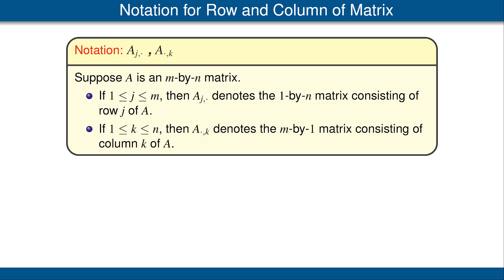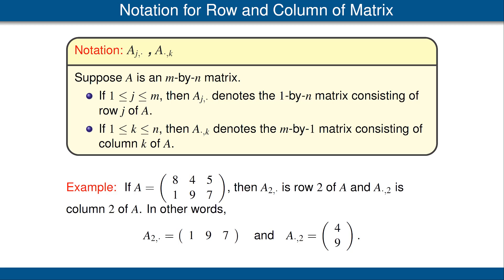I now want to introduce some useful notation for denoting the rows and columns of a matrix. Suppose A is a matrix. Then A with subscript j-dot denotes the jth row of A, and A with subscript dot-k denotes the kth column of A. This is easy to remember because we always think of rows first and then columns when dealing with subscripts. For example, if A is the matrix shown here, then A sub 2-dot (row 2 of A) is the 1 by 3 matrix consisting of 1, 9, 7. Similarly, A sub dot-2 (column 2 of A) consists of 4 and 9, giving a 2 by 1 matrix.